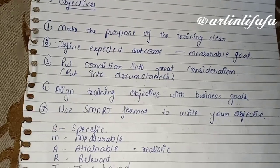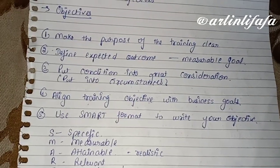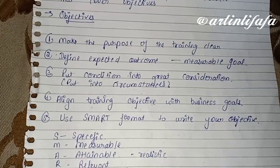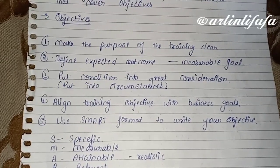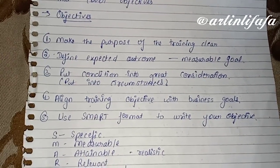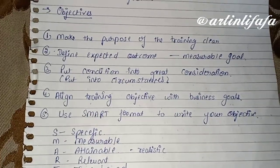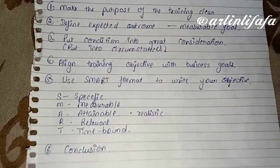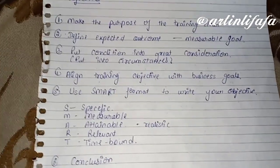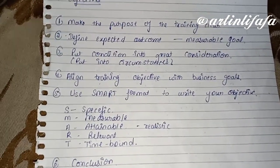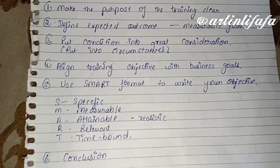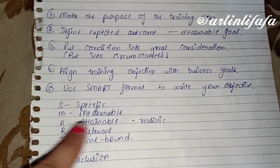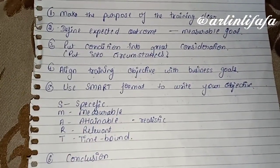Next is align training objective with business goal — सिर्फ personal objective नहीं है training का, बल्कि उसे इस तरह से लो कि business goals achieve करने में भी training helpful हो। Next is use SMART format to write your objective — always use SMART format। यह employees के लिए है।